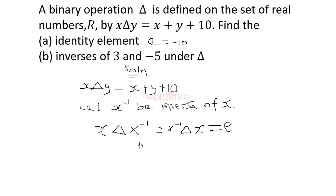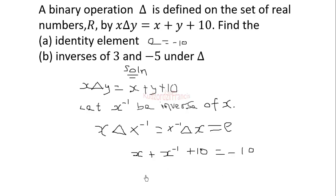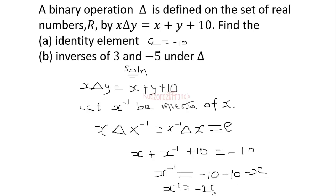We substitute into the definition to get x plus x inverse plus 10 equals the identity element, which is negative 10. Solving for x inverse: x inverse equals negative 10 minus 10 minus x, therefore x inverse equals negative 20 minus x. Factoring out negative one, the inverse of x equals negative x plus 20, or negative of (x plus 20).